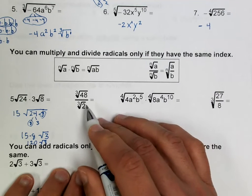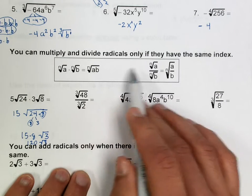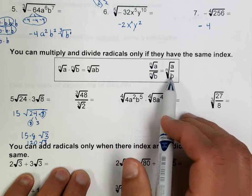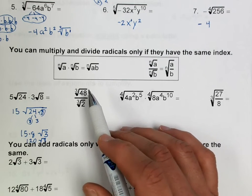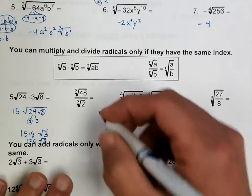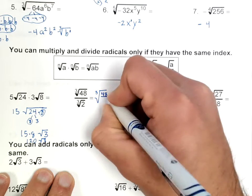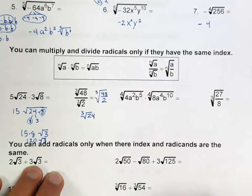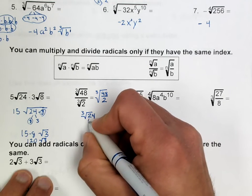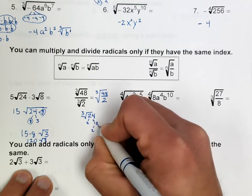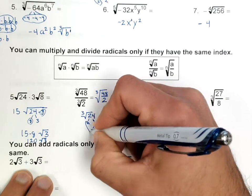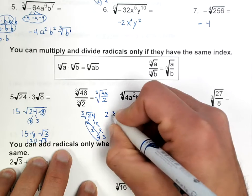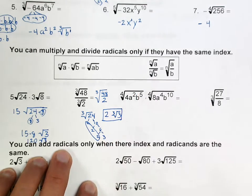Alright, on this part right here, you have these rules that tell you that if you have the same radical — meaning the same root — you can actually multiply them, which is what we did here. And this rule goes both ways. So when you have something like the cube root of 48 divided by the cube root of 2, I can put all of that under the same radical. So now the cube root of 48 over 2 — I can divide that first to get the cube root of 24. Then I break down 24: 2 and 12, 2 and 6, 2 and 3. How many groups of 3 do I have? I have 1, so this would be 2, cube root of 3.